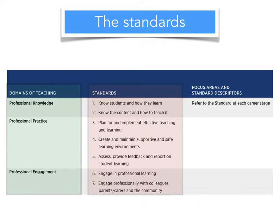Professional knowledge includes standards one and two: standard one, know your students and how they learn, and standard two, know the content and how to teach it. The second domain, professional practice, includes standards three, four, and five: plan for and implement effective teaching and learning; create and maintain supportive and safe learning environments; and assess, provide feedback, and report on student learning. The third domain is professional engagement, covering standards six and seven — engagement in professional learning, and engagement with colleagues, parents, carers, and the community.